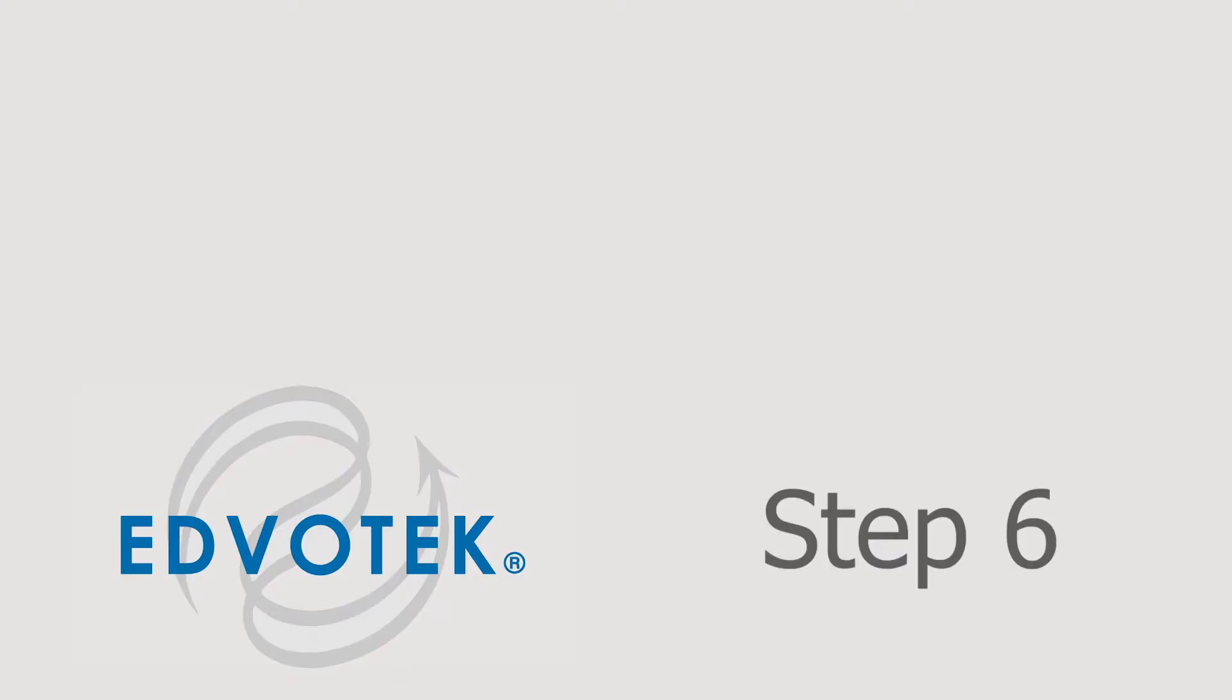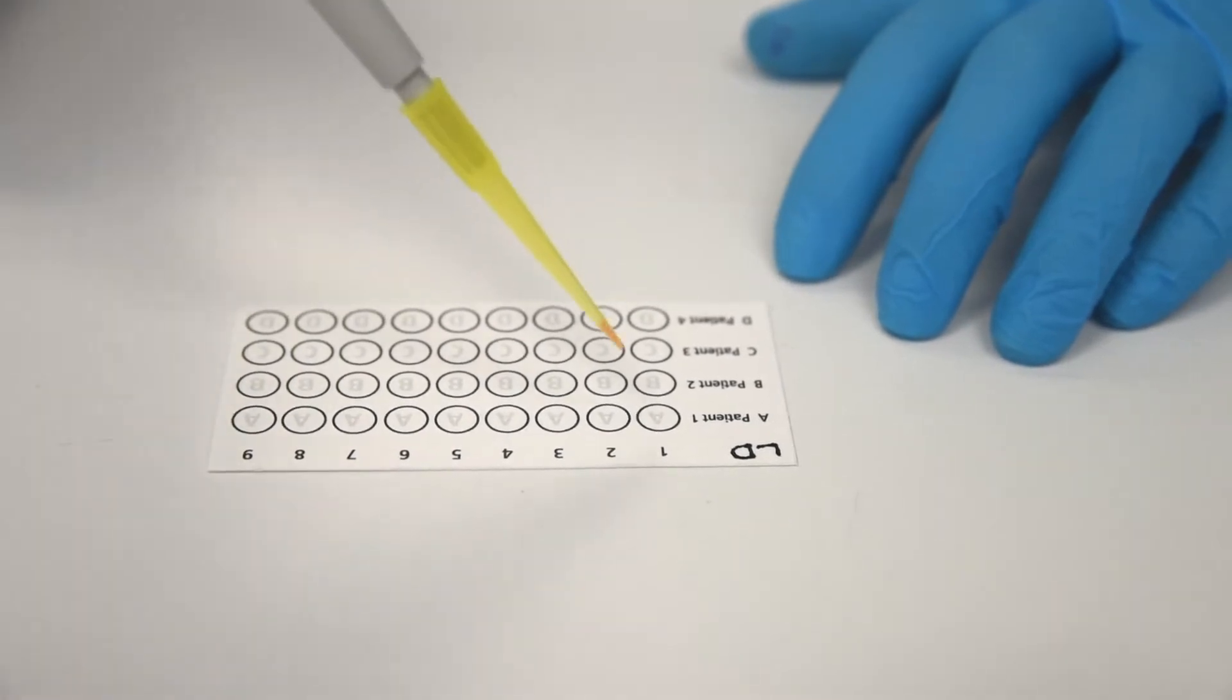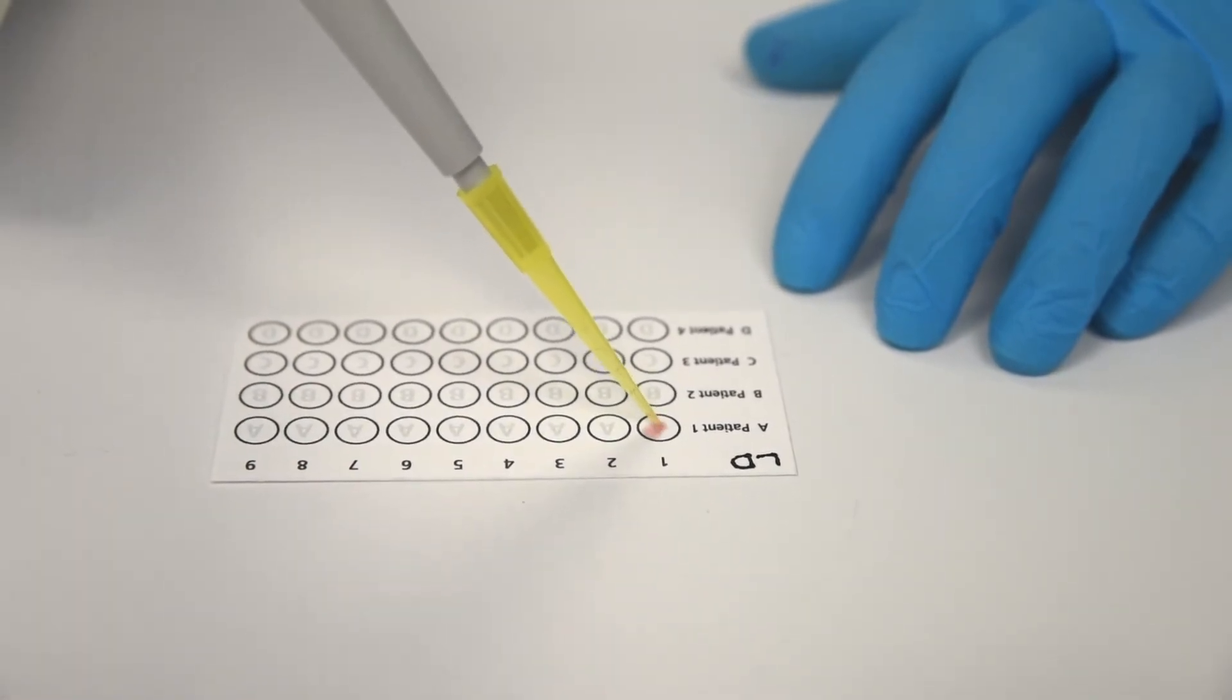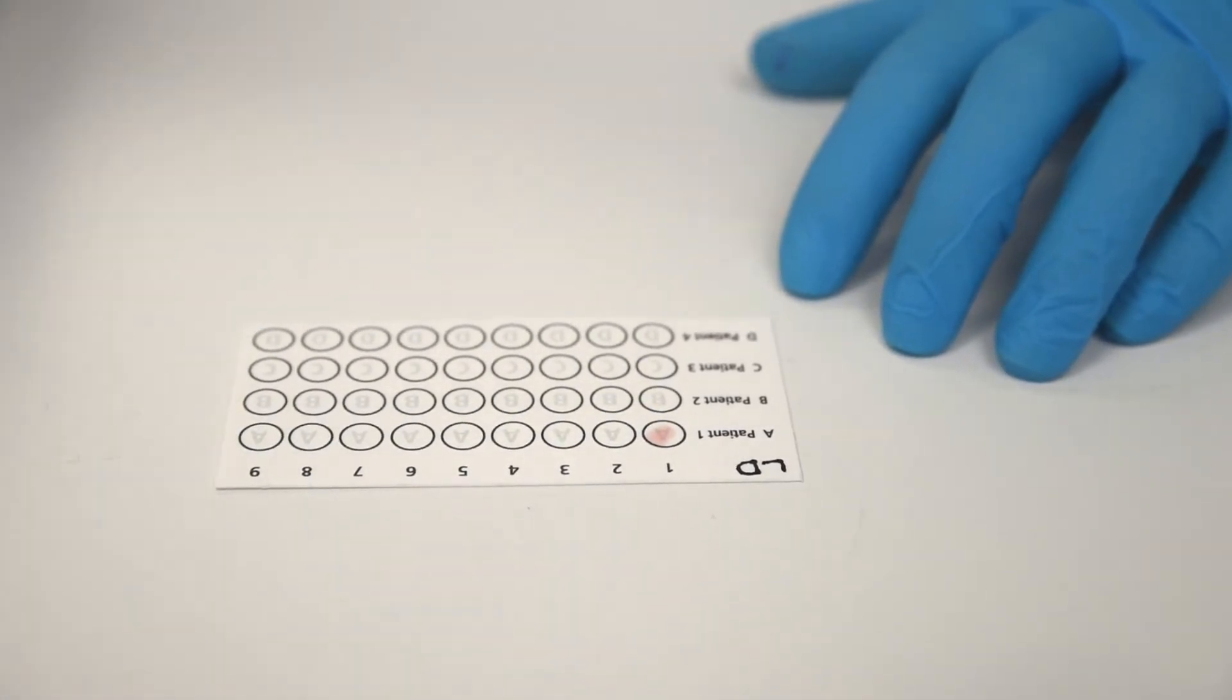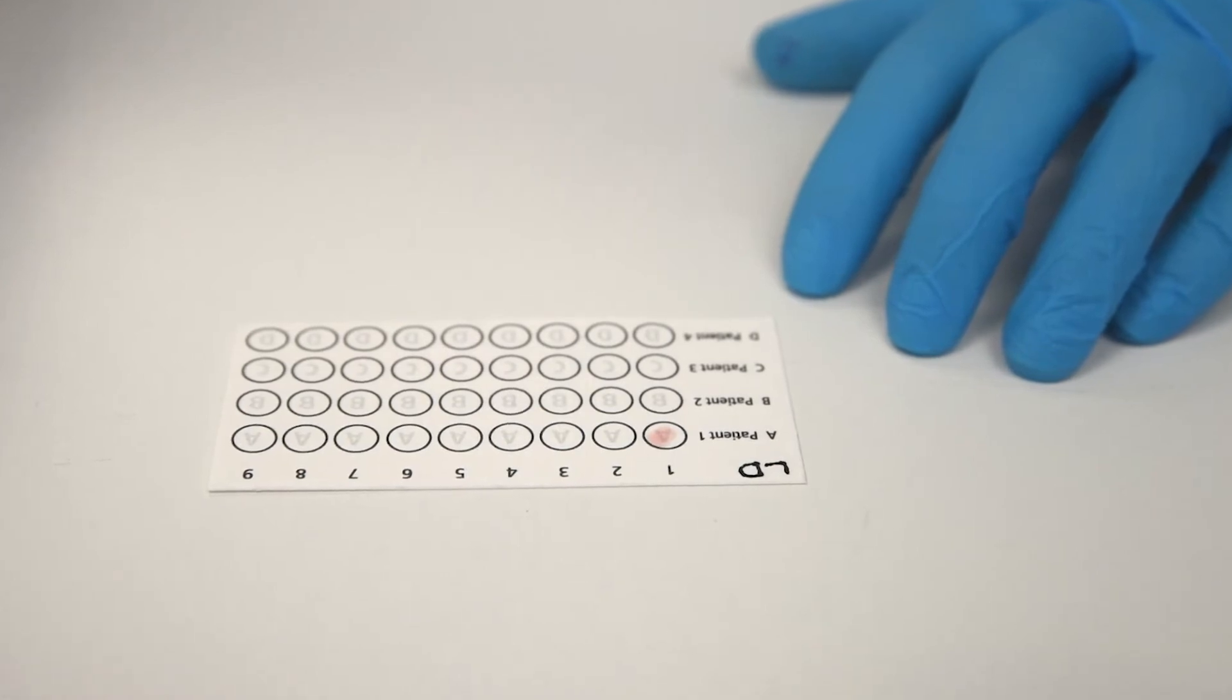Step 6. Still using the same micropipette tip, apply 5 microliters of the mixed sample to the top left spot of the microarray card.